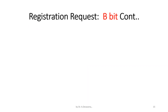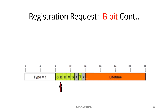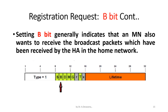The B-bit field in the registration request is indicated by the arrow mark. Setting the B-bit generally indicates that a mobile node (MN) also wants to receive the broadcast packets which have been received by the home agent in the home network.